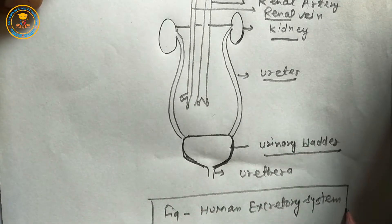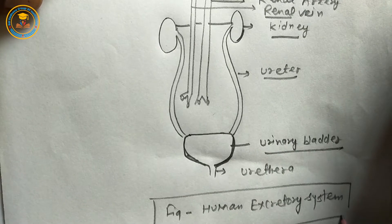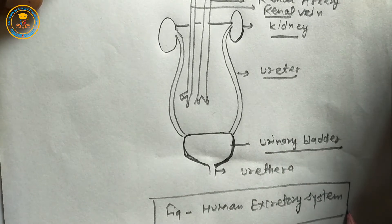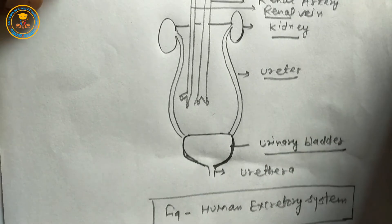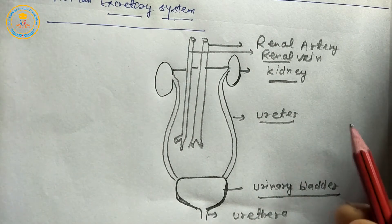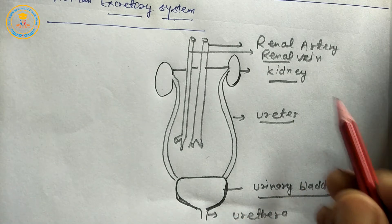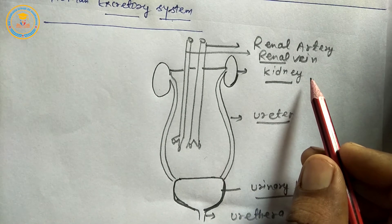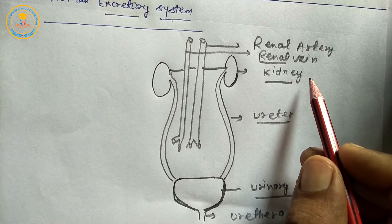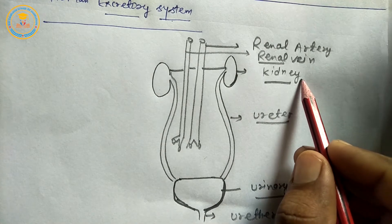Humans have mostly two types of excretory organs. First: primary or main. Second: accessory. The primary or main excretory organ is the kidney.